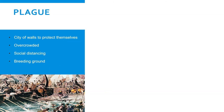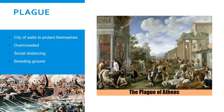According to Thucydides, the disease began in Ethiopia beyond Egypt, then descended into Egypt and Libya and spread over the greater part of the king's territory. Then it fell upon the city of Athens and attacked first the inhabitants of Piraeus, but other countries were not as severely affected as Athens. Deaths were likely doubled because of a huge decline in healthcare — nobody was ready to die by helping others. Most people likely caught the plague because they were dealing with the sick. People were left alone to suffer in pain and die.